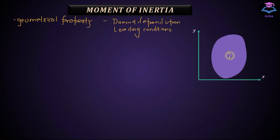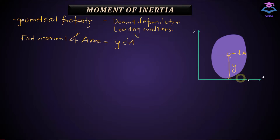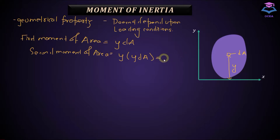If I take a small area element DA and take the second moment of area with respect to a certain axis for this DA element, I would obtain the moment of inertia for this element. To calculate moment of inertia with respect to the X axis, assuming the perpendicular distance from the X axis is equal to Y, the first moment of area is Y·DA, and the second moment of area is Y·Y·DA, which becomes Y²·DA. So dIX = Y²·DA.